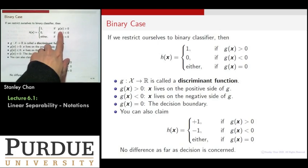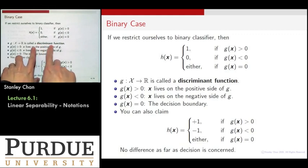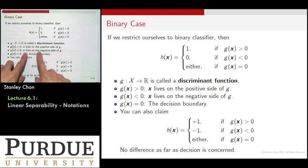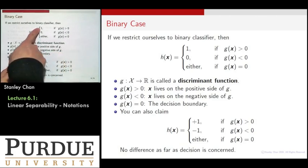Now, this g function, it is a function that takes an image and then gives you some score. That's called a discriminant function. And then you have three situations where g(x) is positive when x lives on the positive side of g, negative when x lives on the negative side of g, or equals to zero. Now, and as before, you can also encode it by plus one, minus one, rather than one and zero.